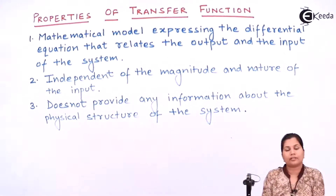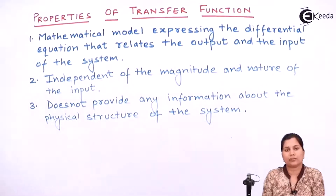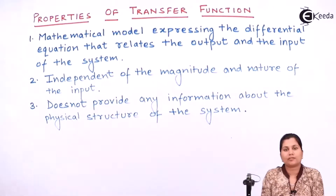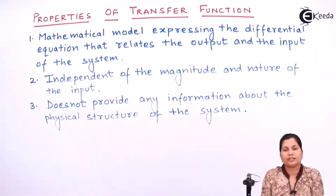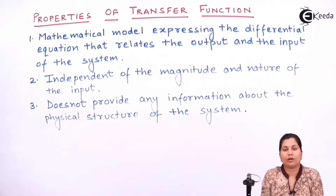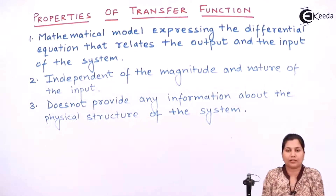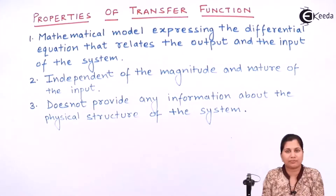The third property is that the transfer function does not provide any information about the physical structure of the system. We know that the system consists of various components, so the transfer function does not tell us how many components are present, how they are connected, or what is the sequence of their connection.